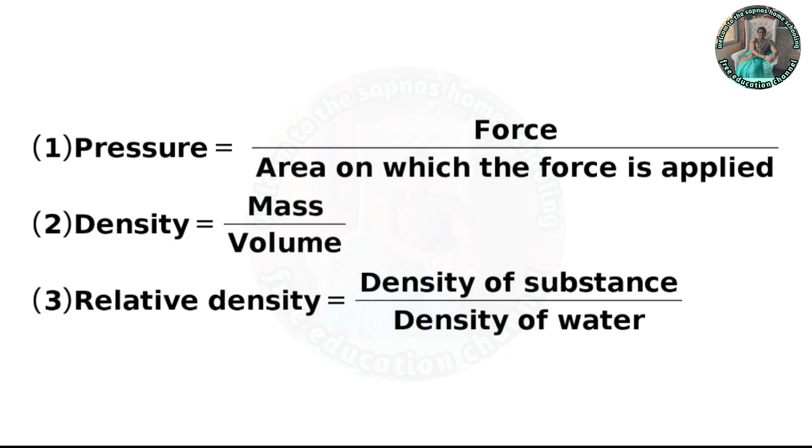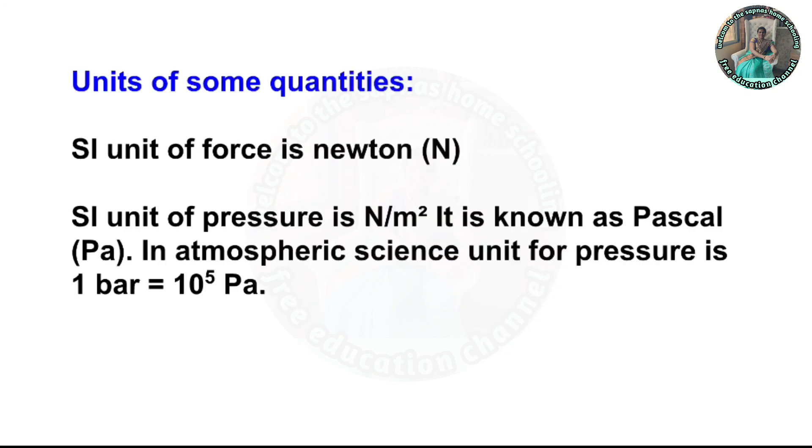Units of some quantities: SI unit of force is Newton, and SI unit of pressure is N per m squared, known as Pascal (Pa). In atmospheric science, the unit for pressure is 1 bar equals 10 raised to 5 Pa.